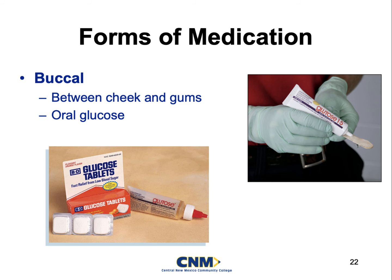Moving on to buccal. You have one drug that uses buccal administration, and this is where students get confused. That drug is called oral glucose. It's not technically an oral medication - it is a buccal medication. Buccal means it goes in between the cheek and the gum line, kind of like chewing tobacco. This is used for our diabetic patients with low blood sugars in order to get their blood sugars back up. We'll talk about that more when we cover endocrine emergencies.